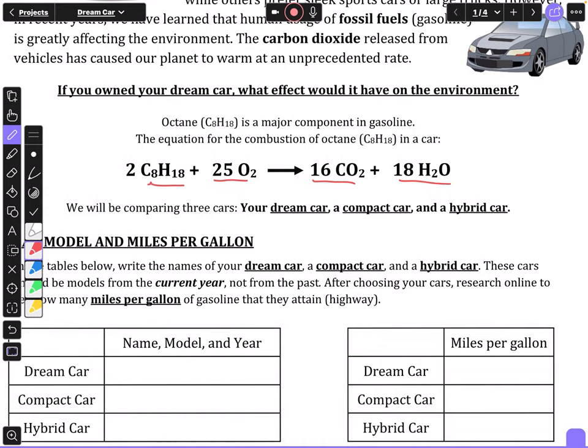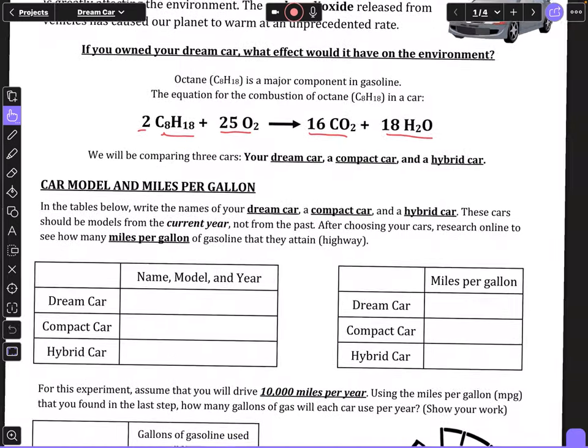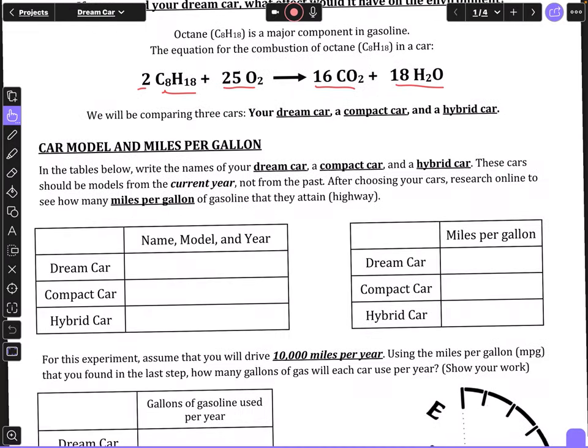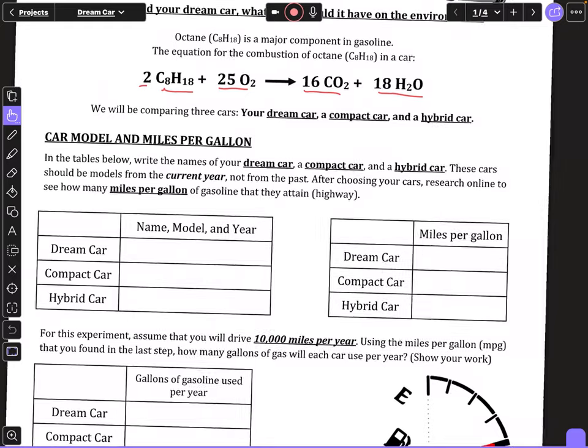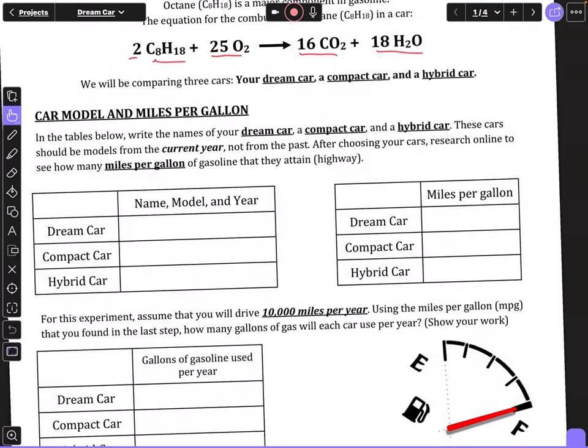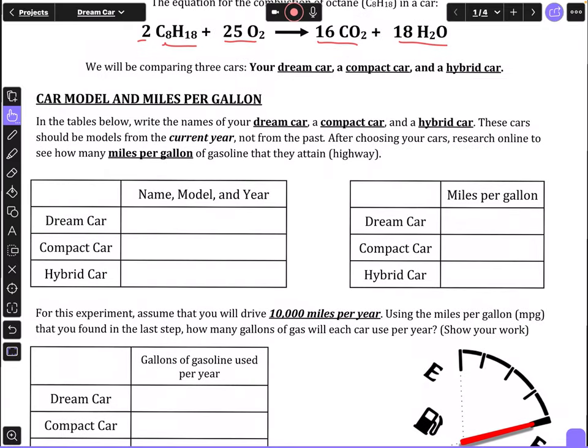You're going to be comparing three cars: your dream car, a compact car, and a hybrid car. First, in the tables below, write the names of your dream car, a compact car, and a hybrid car. You can research on the internet - you probably know what your dream car is, but you can look up compact cars and hybrid cars. You need to name the model and the year.